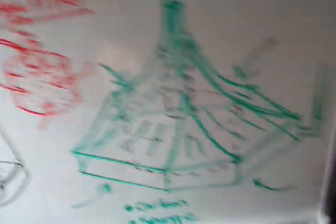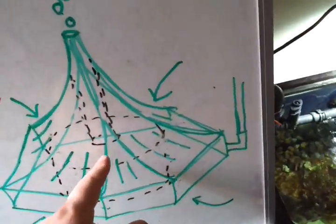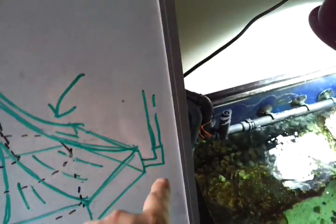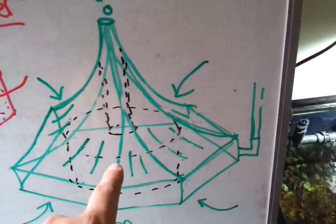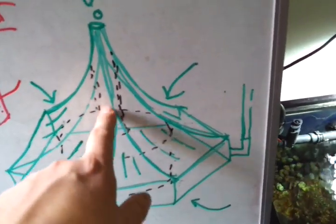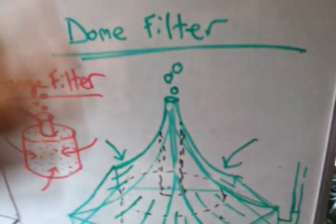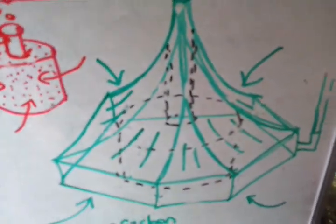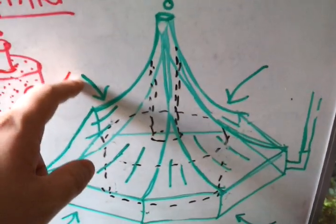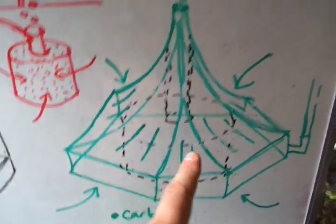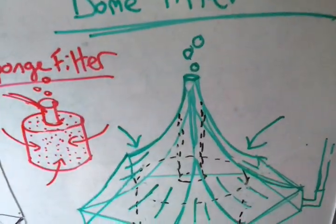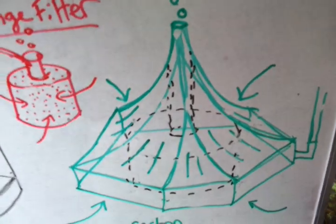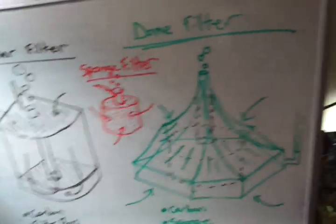So again, it's a sponge filter. And it acts the same way. You've got the airline hose in. It ejects the air through the uplift tube and out the top. So you've got your bubbles being created. And you've got water coming in through the top and through the bottom, leaving the top. And essentially, all you have is a sponge filter inside of a corner filter.